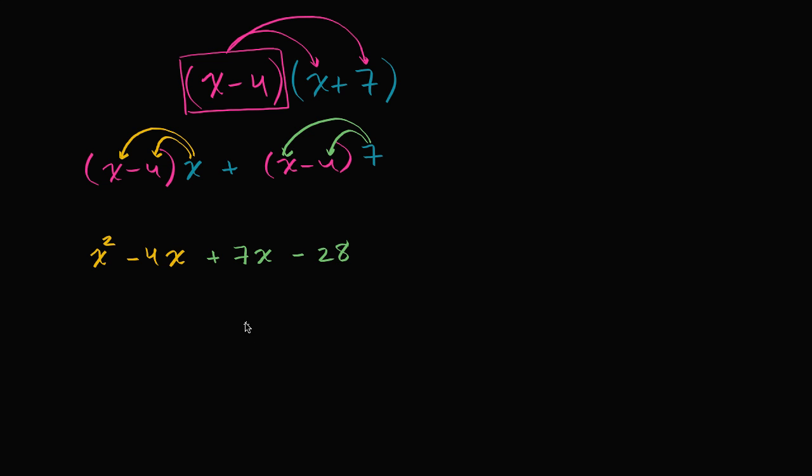And now we can simplify this a little bit. We see that we have two first-degree terms, two terms where I have a certain number of x's. And so we can combine these. So I have x squared. If I take these two middle terms, if I take negative four x and then add seven x's, that's going to give me positive three x. Negative four plus seven is positive three.